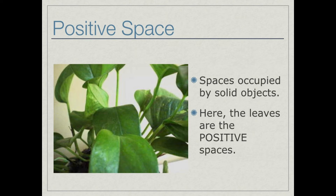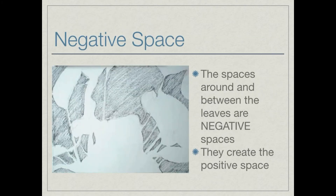Here's another example of positive space. Spaces occupied by solid objects are considered positive space. Here the leaves are the positive spaces. Now here's the same exact image of those leaves, but this time the negative space is drawn — the spaces around and between the leaves are negative spaces, and by drawing those, they create the positive space.